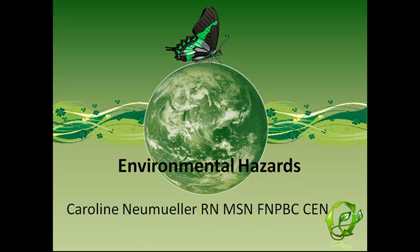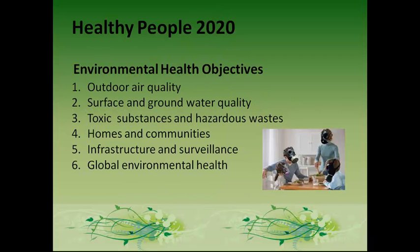This is an Environmental Hazards and Emergency Preparedness lecture. Healthy People 2020 has six environmental health objectives. They include outdoor air quality, surface and ground water quality, toxic substances and hazardous waste, homes and communities, infrastructure and surveillance, and global environmental health.